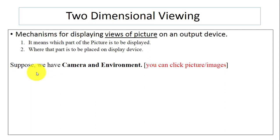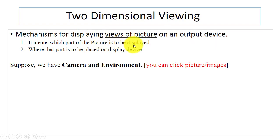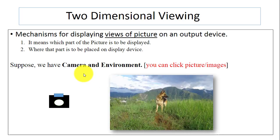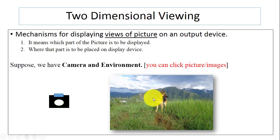First of all, what is 2D view? It is the mechanism we use for displaying views of the image on an output device — which part of the picture is to be displayed on the output device, and where that part is to be placed on the display device. Suppose we have a camera and in real life you can click pictures around you. Here I'm using this image for the environment, and I want to display the dog on the screen. By the end of this video we will display just this dog on the screen.